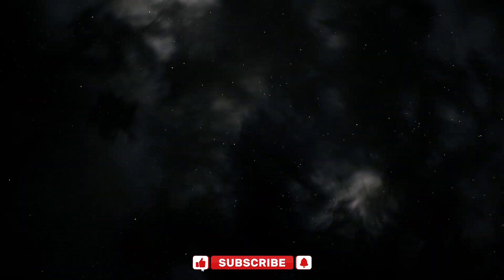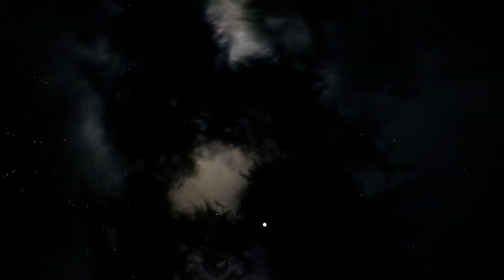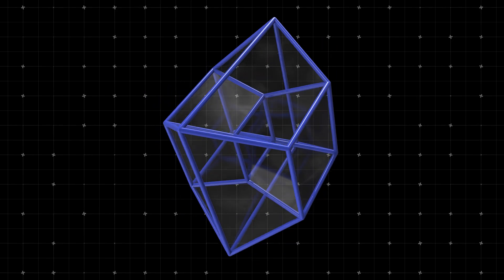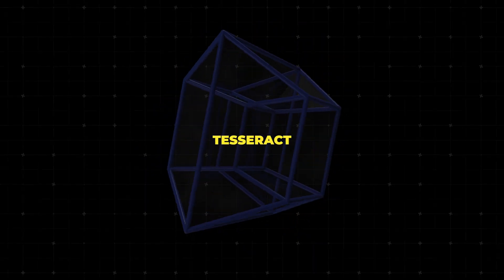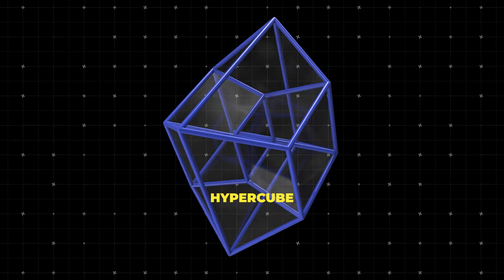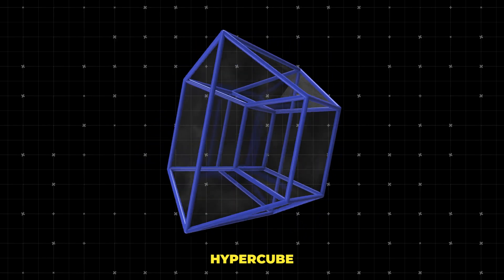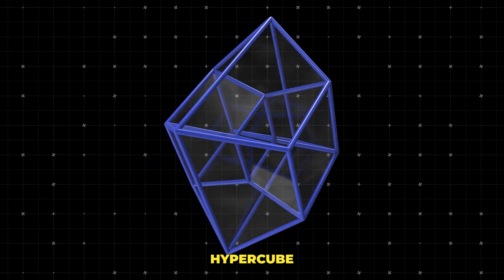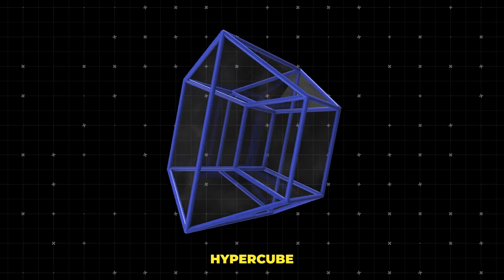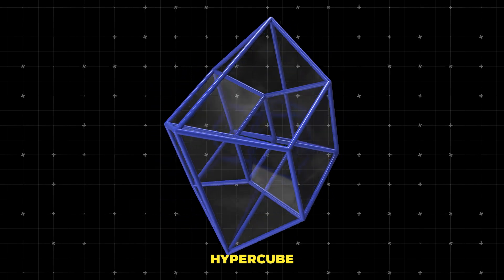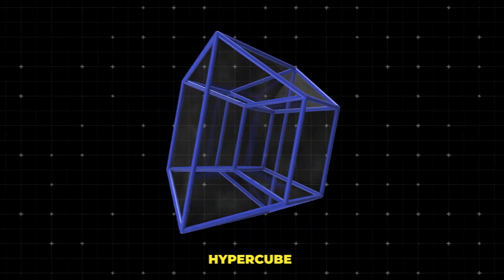Imagine a 3D object like a cube. Now imagine it extending into a direction perpendicular to all three spatial dimensions. Difficult, right? That's the challenge of visualizing the fourth spatial dimension. One famous 4D shape is the tesseract, or hypercube — a cube that extends into the fourth dimension. When represented in our 3D space, it appears to be constantly changing shape, a bewildering illusion of our limited perspective.